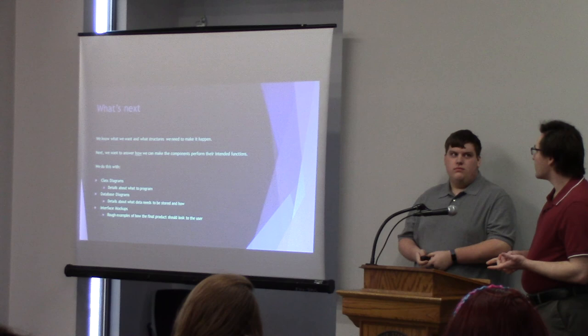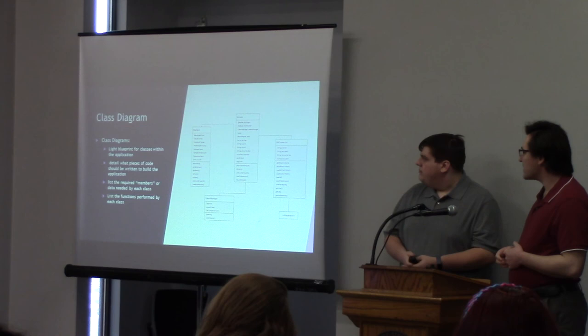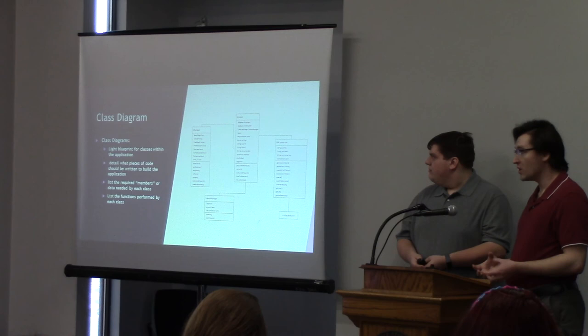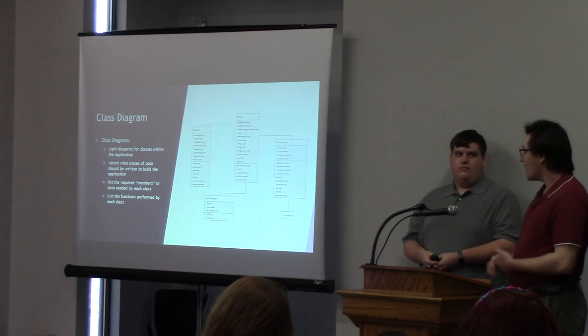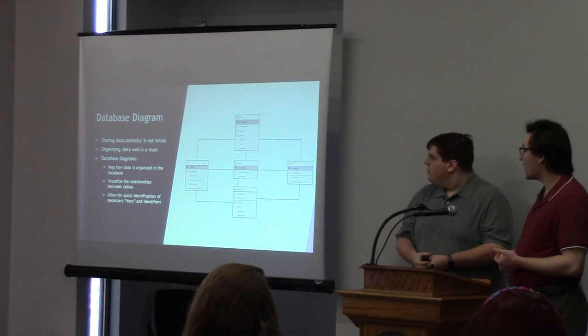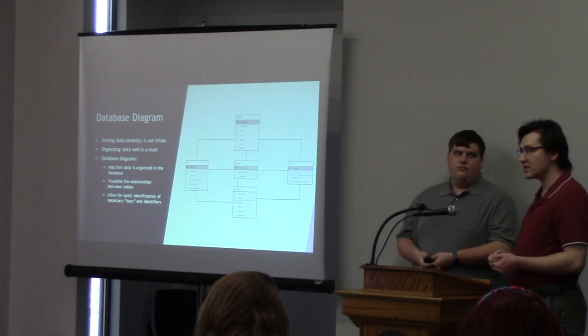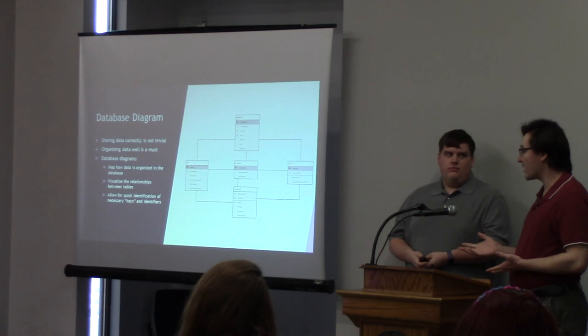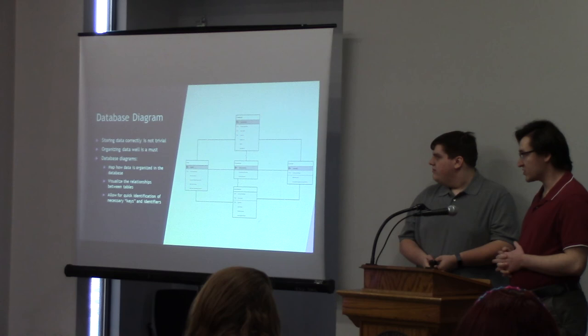Class diagrams are basically a tree of all the different pieces of code that we will write when we get to the implementation process. The top half of each class diagram tells us what sort of data that class needs to hold, and the bottom is the list of tools to accomplish its goals, connected to show who can talk to who. The database diagram shows how our internal information will be stored and organized — it's one of the more complicated figures, but very useful because when you go to implement it, you can look at this and know exactly how everything needs to be set up.